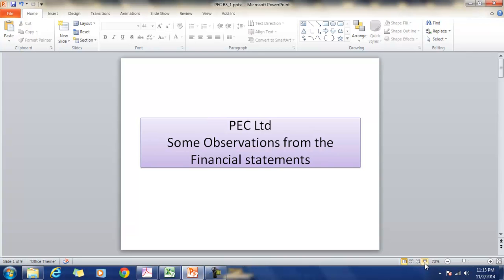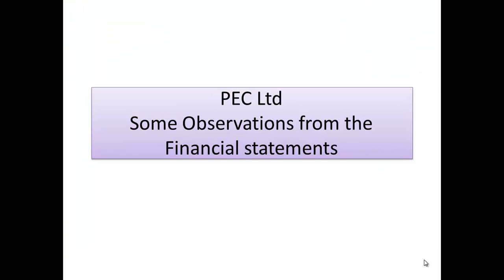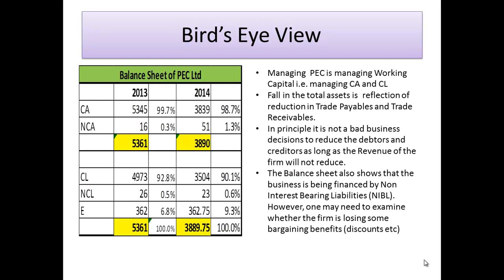Welcome to the financial statement analysis of PEC Limited, a public sector company. We will make observations based on the financial statements of 2013-14. A bird's eye view of the balance sheet shows that the total assets have decreased from 5,000 crores to 3,889 crores over the period.